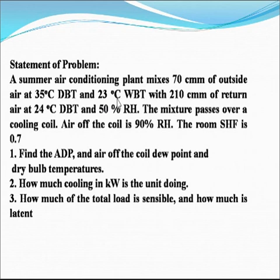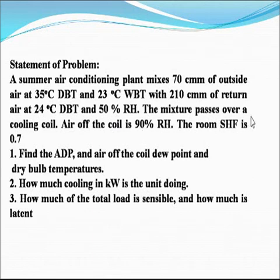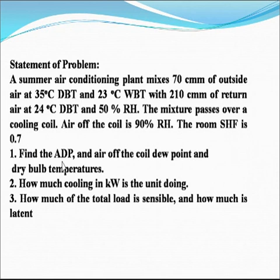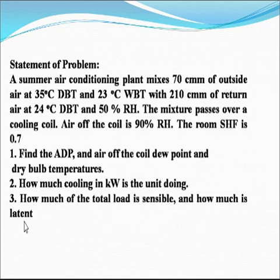with 210 cubic meters per minute of return air at 24 degrees Celsius DBT and 50% RH. The mixture passes over a cooling coil. Air leaving the coil is at 90% RH. The room sensible heat factor is 0.7. First, find the apparatus dew point, and the dew point and dry bulb temperature of air leaving the coil. Second, how much cooling in kilowatts is the unit doing? Third, how much of the total load is sensible and how much is latent?